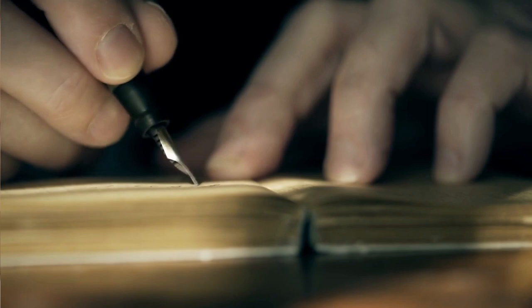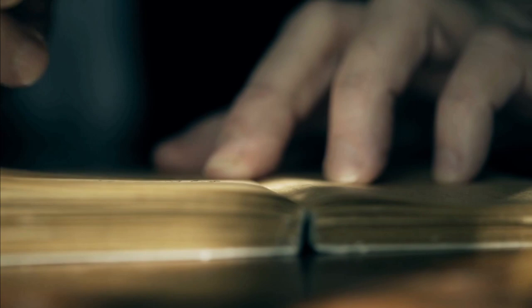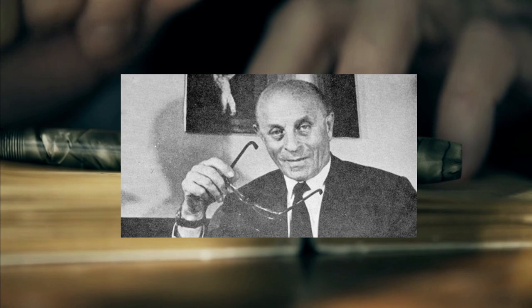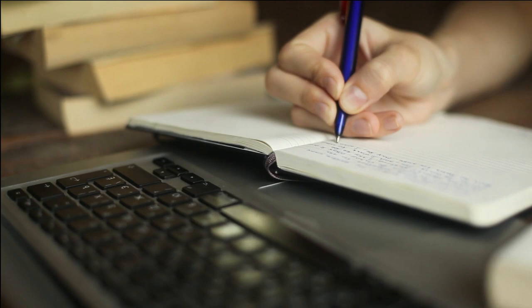However, the fountain pen still had its flaws. The ink would leak, and the pen had to be refilled often. So in 1945, a man named Laszlo Biro invented a new type of pen called the ballpoint pen. The ballpoint pen used thicker, oil-based ink that didn't leak, and the ink was stored inside the pen so it didn't have to be refilled as often.